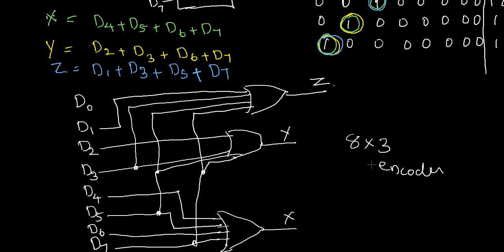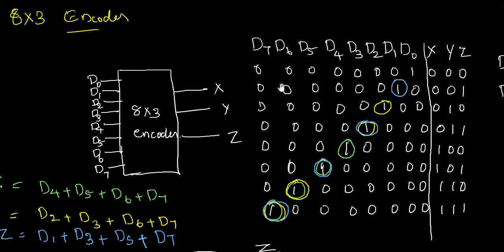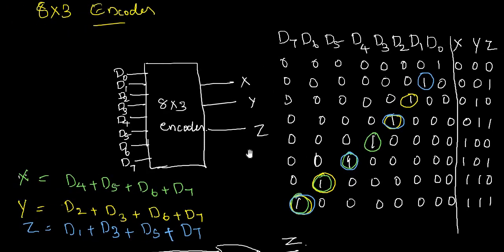In this lecture, we dealt with only one bit change — at a time only one bit is high. Next, we will discuss the priority encoder, where more than one bit can be high simultaneously and the output depends on the priority of the bits. That will be discussed in the next lecture. I hope all of you understood this topic well. Thank you.